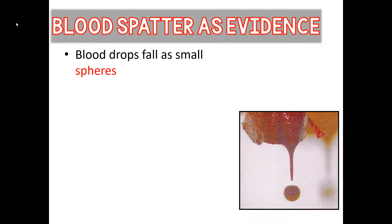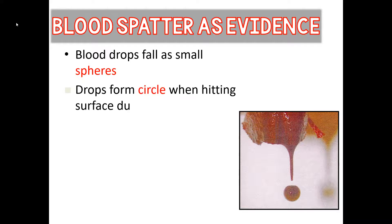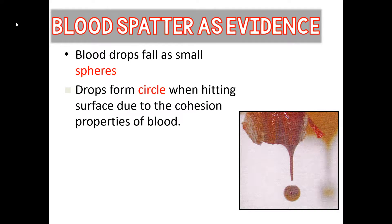A trained investigator will try to determine how blood got on a surface, how fast it was moving, and what object was used to create that pattern. You need to know that blood falls as spheres — you can see that perfect sphere in the picture. When we have a passive drop, meaning blood was drawn downward by gravity, it forms that sphere on the way down and hits the surface at a 90-degree angle, creating a circular pattern with spikes and satellites. That circular pattern is basically due to the cohesion properties of blood.